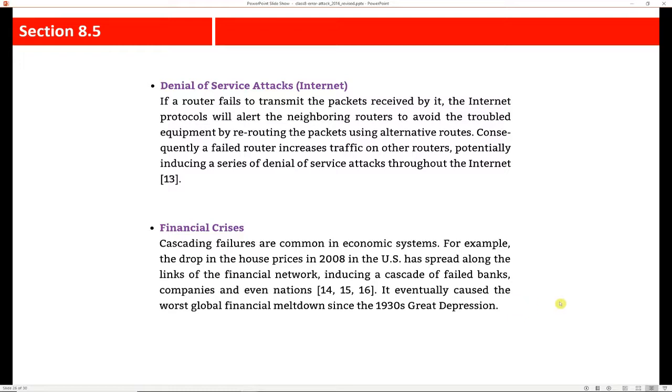Other types of cascading failures you can think about include denial of service attacks. So if a particular site is affected and routers try to route to neighboring routers, then they're just sending a lot of traffic a different way and potentially inducing a series of denial of service attacks throughout the internet. Financial crises also fall under the category of cascading failures. You can think about different financial crises that we've had in history, as well as, say, the run on the bank movie, It's a Wonderful Life.